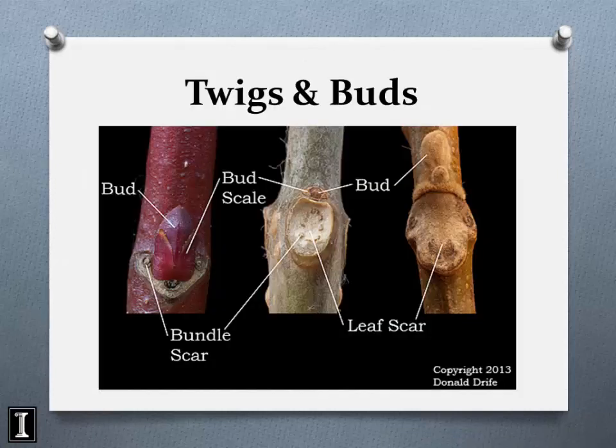Here are some examples: a butternut twig showing a lateral bud with a superimposed bud on top, a catalpa twig with a whorled structure, and a maple twig for comparison.